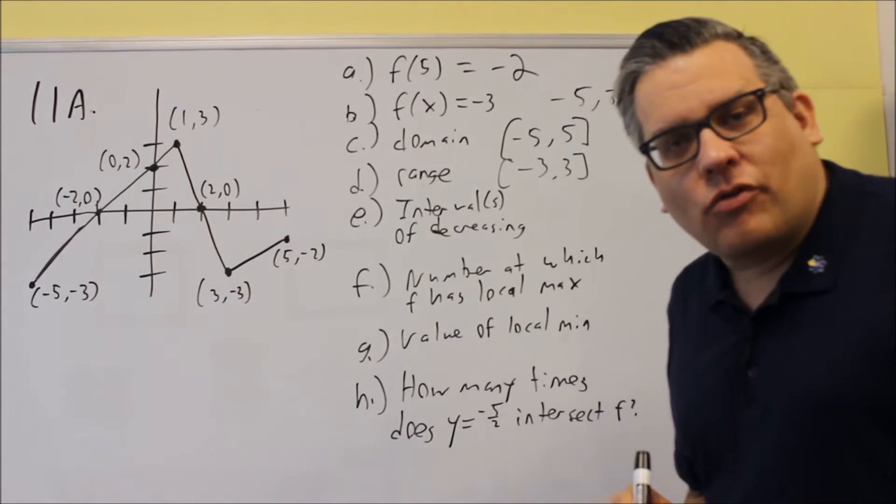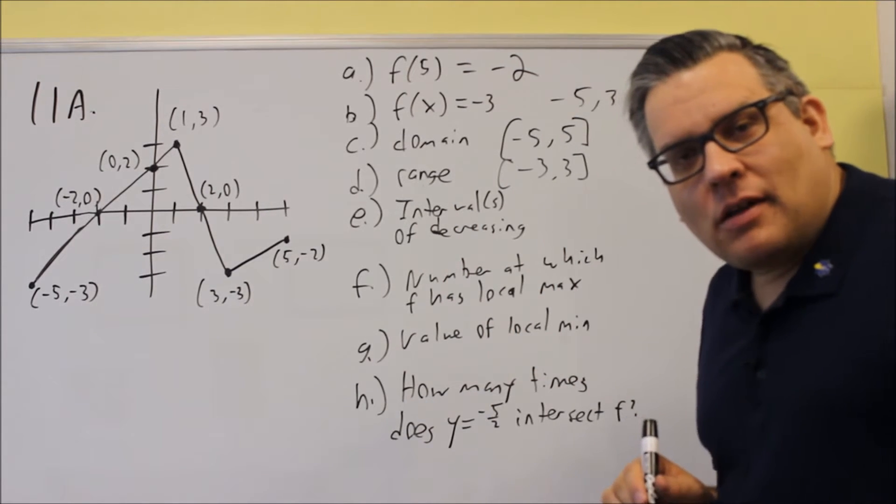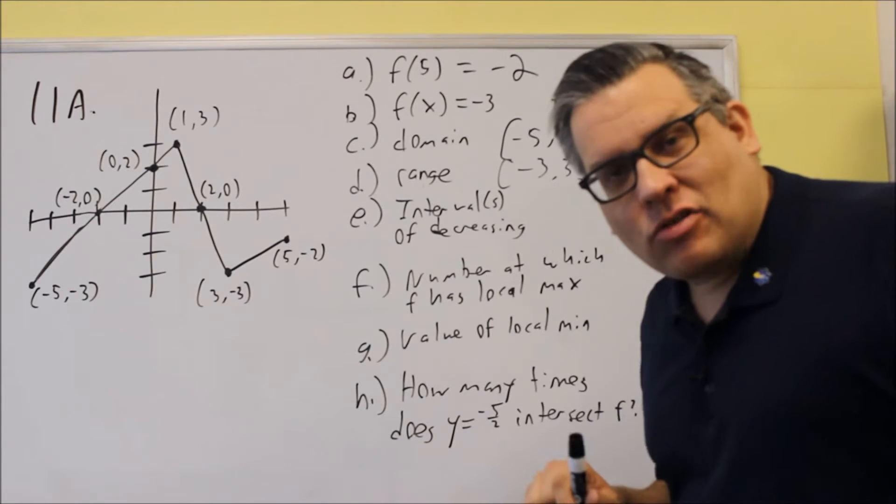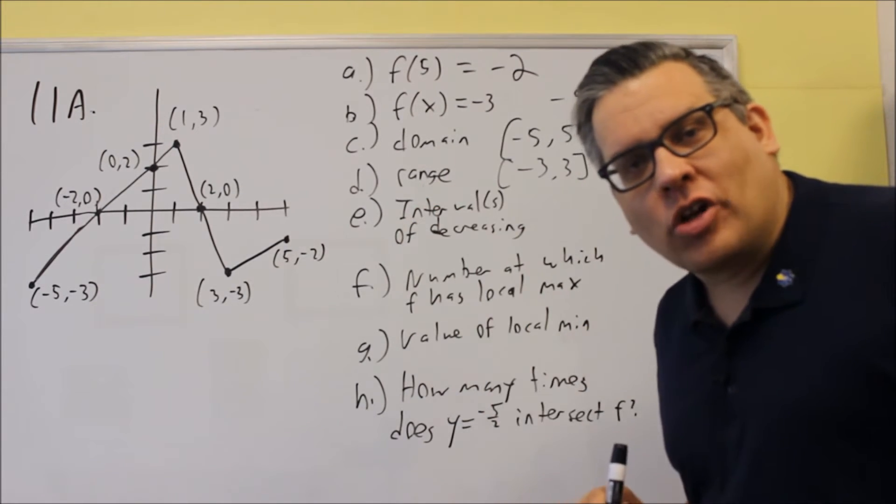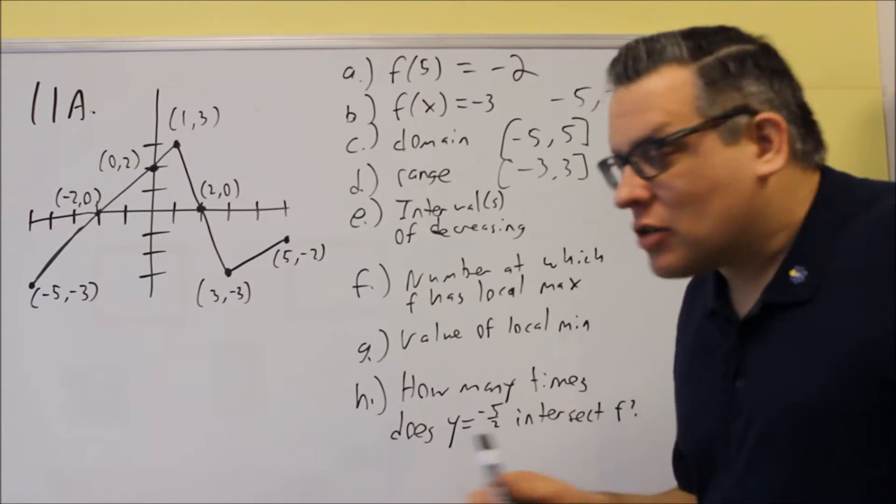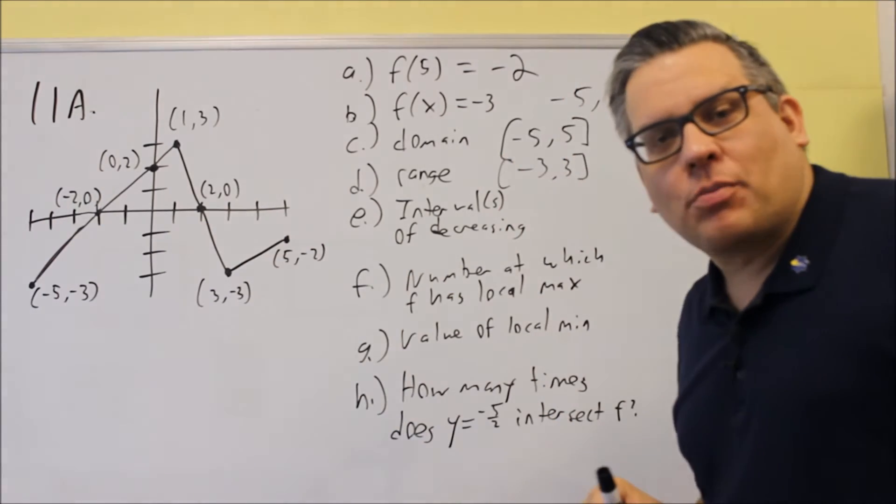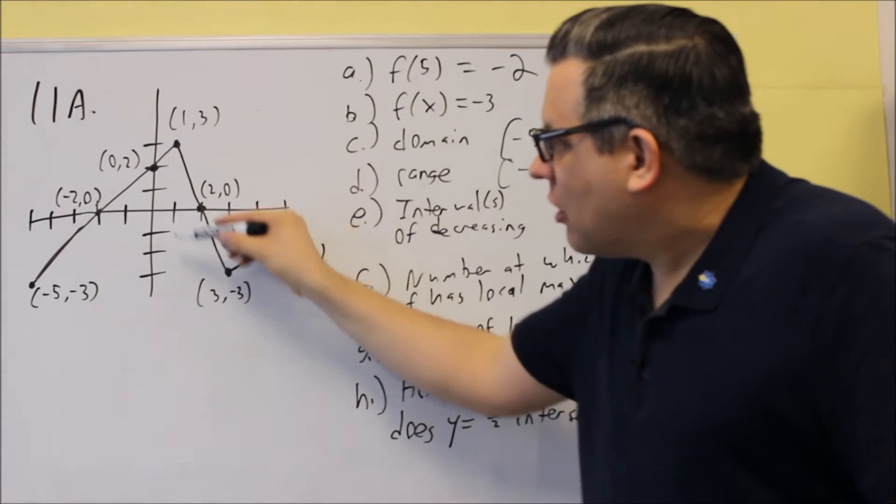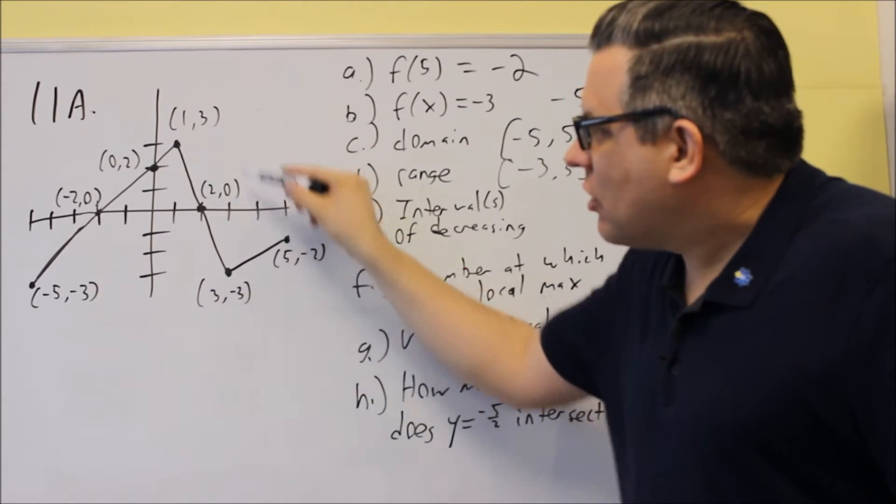Now E says intervals of decreasing. So what you're doing is you're giving the x values for which the graph is falling as you go from left to right. So as you go from left to right, you're looking for the part of the graph that's going downhill. That's going to occur this section of the graph here.